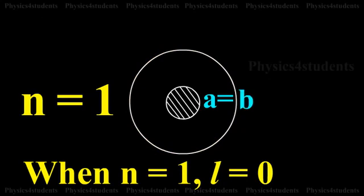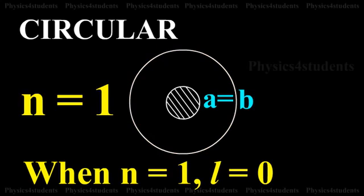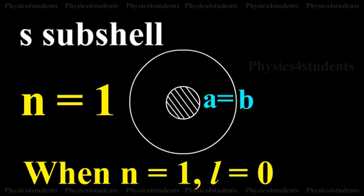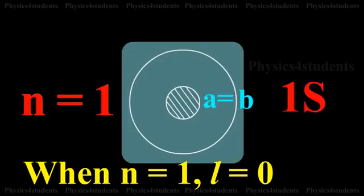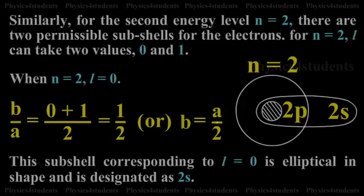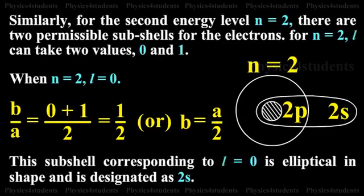When we substitute, we get a = b, meaning the major axis and minor axis are the same. This results in a circular orbit. So for n = 1, the subshell is named 1s, where 1 stands for n and s corresponds to the l value of 0.